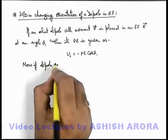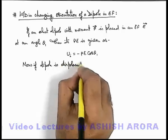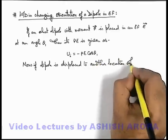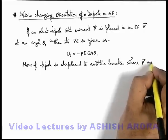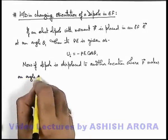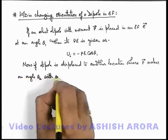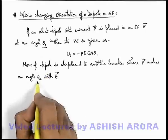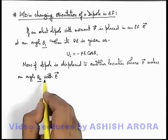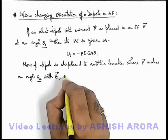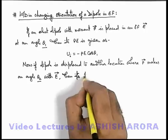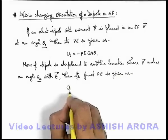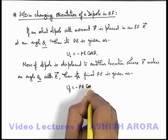If this dipole is displaced to another location where the dipole moment p-vector makes an angle theta 2 with the e-vector — that means we have changed the orientation. Initially the dipole was located at an angle theta 1 to the electric field, and now it is finally placed such that it is located at an angle theta 2. Then we can say its final potential energy is given as minus p·E cos(theta 2).